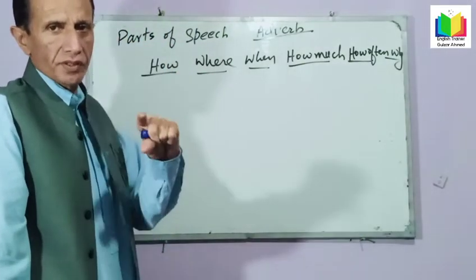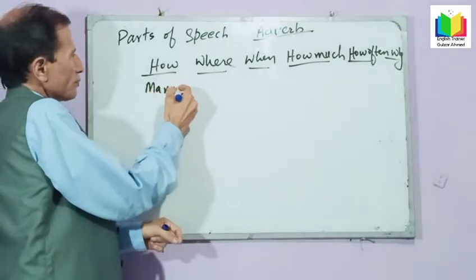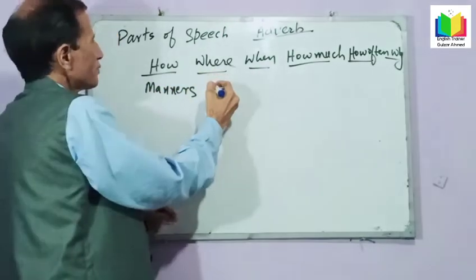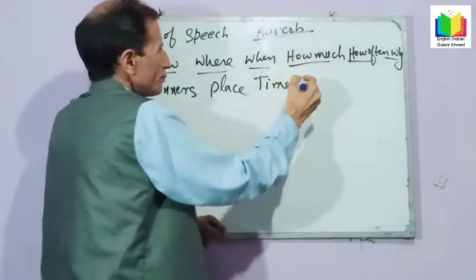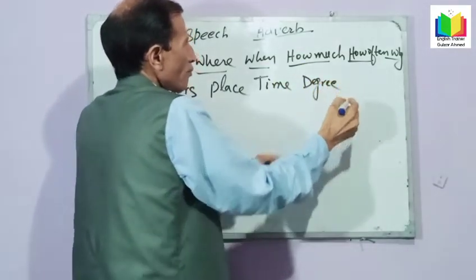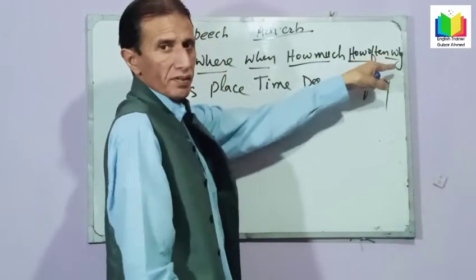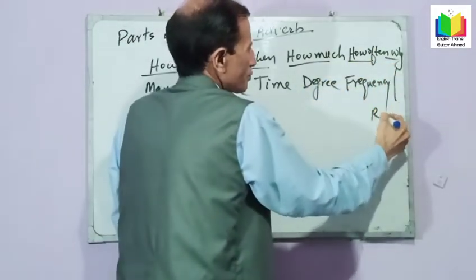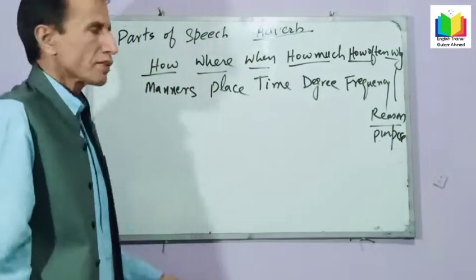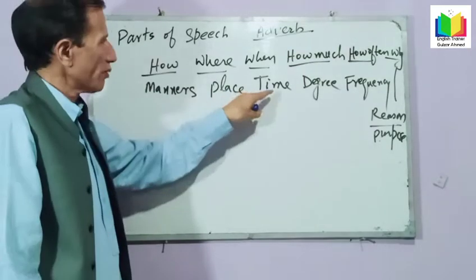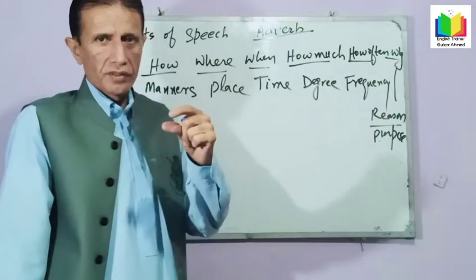We will hear these questions: how is the manner? Where is the place? When is the time? How much — degree. How often — frequency. For why — reason or purpose. So we can say: adverb of manner, adverb of place, adverb of time, adverb of degree, adverb of frequency, or adverb of reason or purpose.